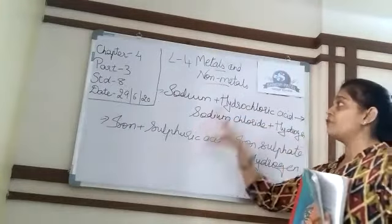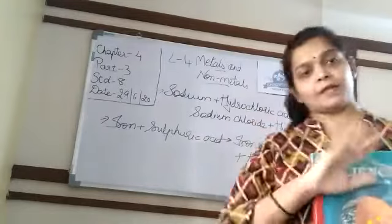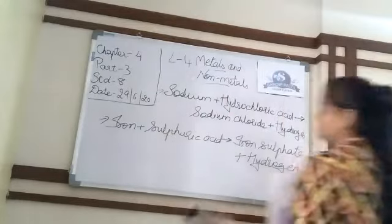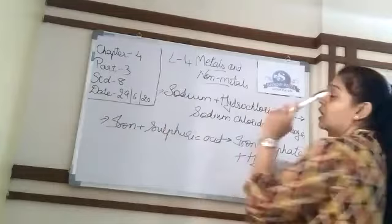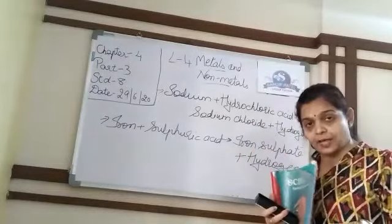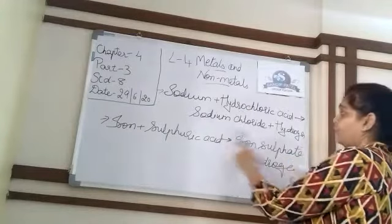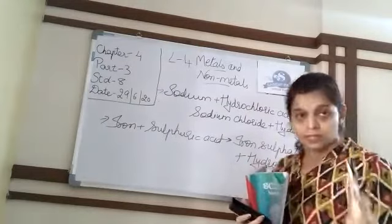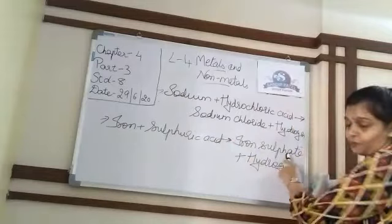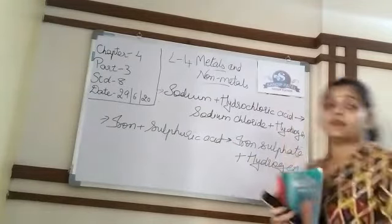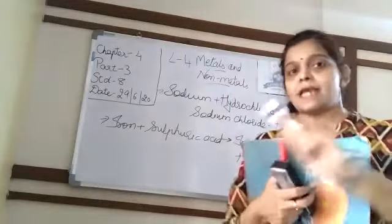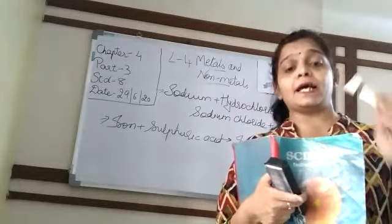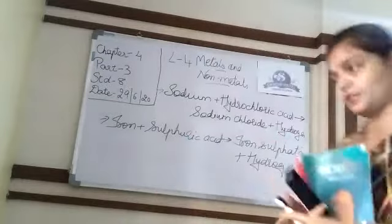So the reaction of acid and base with metals and non-metals is clear, children. To summarize: metals react with dilute hydrochloric acid to form chlorides and release hydrogen gas; with sulfuric acid, sulfates and hydrogen gas are released. Generally, non-metals do not react with acid and base — those reactions are very difficult.